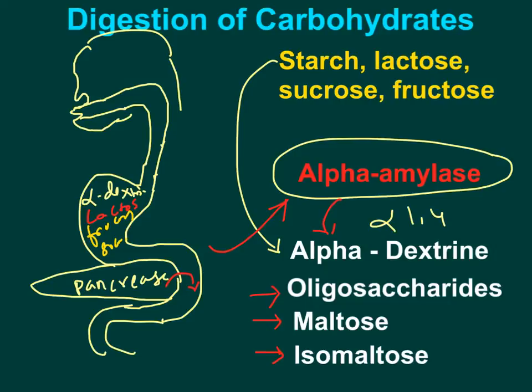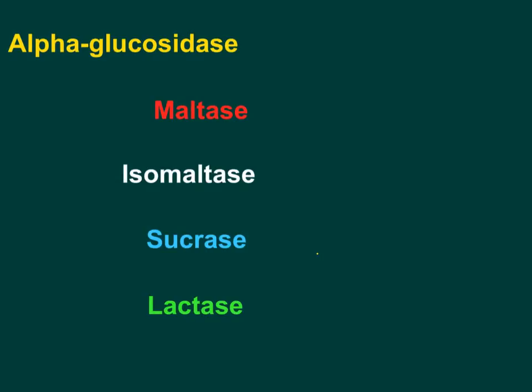Oligosaccharides are chains of three to nine glucose-containing monosaccharide units. Maltose consists of two glucose units attached by an alpha 1,4 glycosidic bond. Isomaltose consists of two glucose units attached by an alpha 1,6 glycosidic bond. So at the end of the action of both amylases, the intestinal lumen contains oligosaccharides, maltose, and isomaltose.